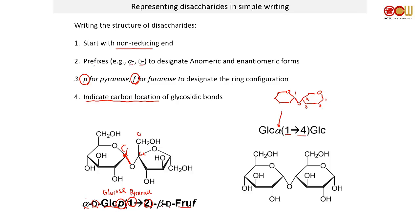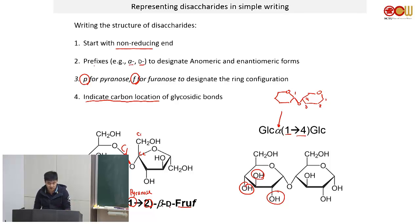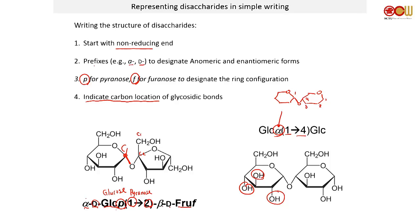For exam purposes, I will not ask you to memorize the stereochemistry of every hydroxyl group. I'll give you pictures, so you don't have to be anxious about that. But if you want to be a future biochemist, it's a good idea to know the chemical structures of common sugars. What you definitely have to know is that alpha is down and beta is up. You should also know that for glucose, the hydroxyl on carbon 4 points down — that's why the alpha-1,4 structure looks the way it does.